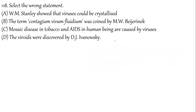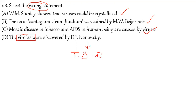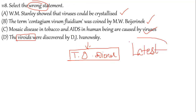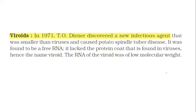Question 118: Select the wrong statement. W.M. Stanley showed viruses could be crystallized — correct. The term 'contagium vivum fluidum' was coined by M.W. Beijerinck — yes. Mosaic tobacco disease and AIDS are caused by viruses — correct. Viroids were discovered by T.O. Diener in 1971. Please download the latest edition of NCERT as there are changes in the viruses section. The correct answer is based on the viroids discovery fact.